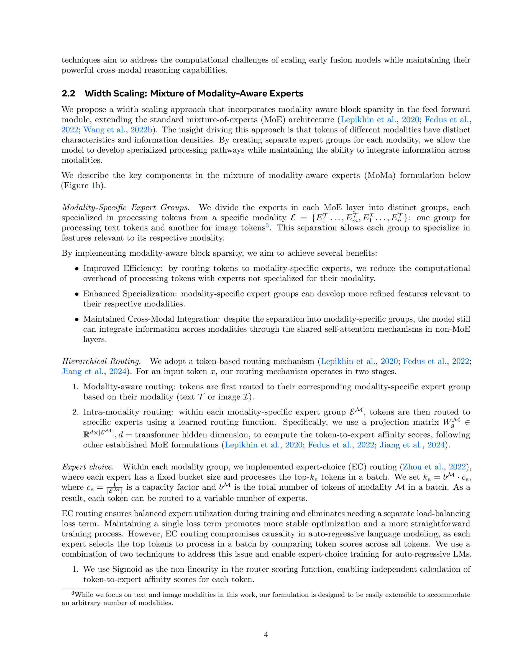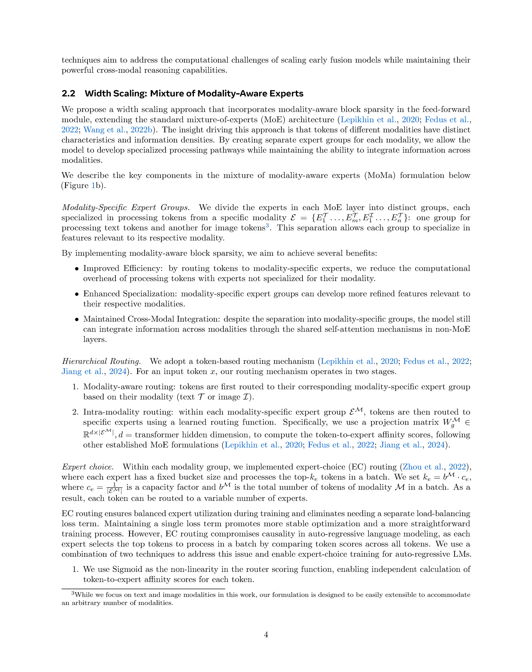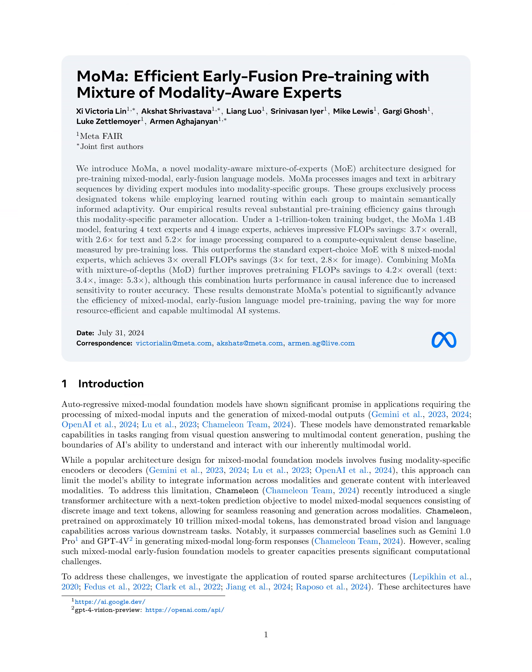By implementing modality-aware block sparsity, MoMA reduces the computational overhead associated with processing tokens through non-specialized experts, leading to significant flop savings — 3.7 times compared to a dense baseline. Additionally, the architecture incorporates learned routing mechanisms that adaptively route tokens to the appropriate experts, optimizing the model's performance in handling the distinct characteristics and information densities of different modalities. Overall, MoMA effectively enhances the scaling performance and efficiency of mixed modal early fusion models, addressing the challenges of integrating diverse modalities in a unified framework.